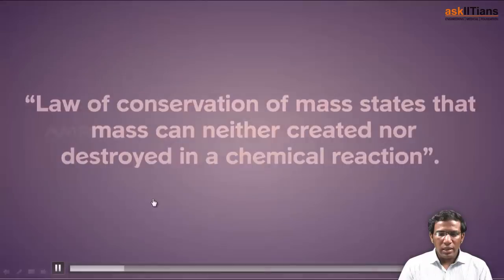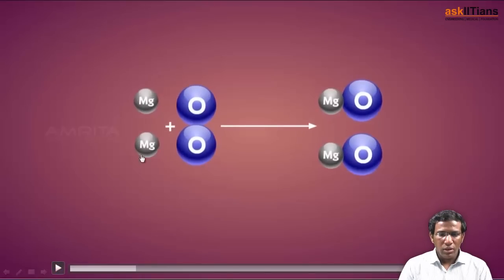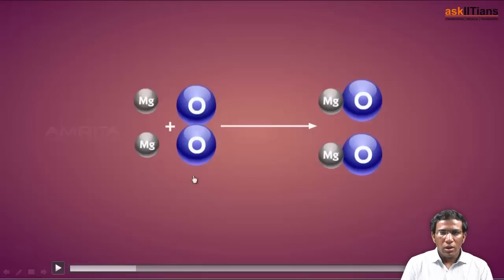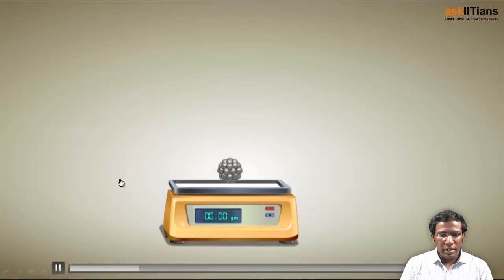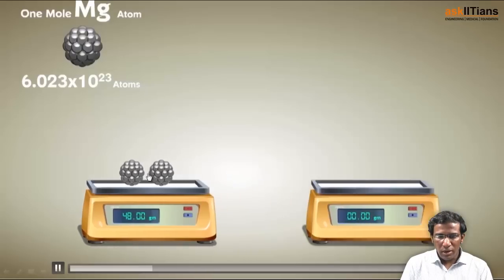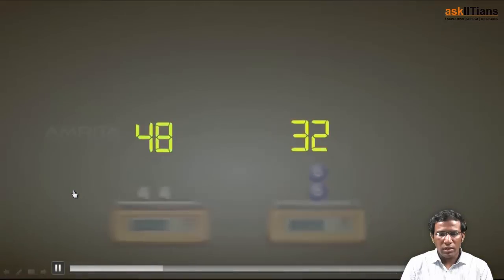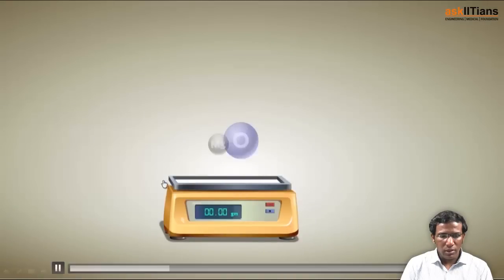In this example, magnesium is reacting with oxygen and forming magnesium oxide. Two magnesium atoms react with one oxygen molecule to form two formula units of magnesium oxide. Taking two moles of magnesium — which is 48 grams — and one mole of oxygen — which is 32 grams — the total mass of the reactants is 48 + 32 = 80 grams.